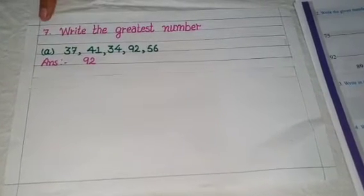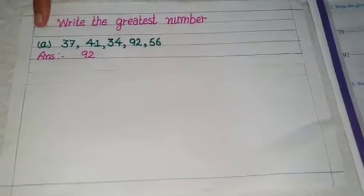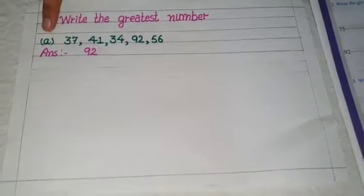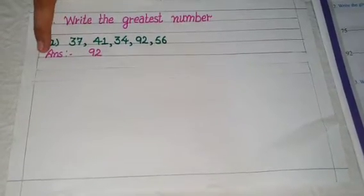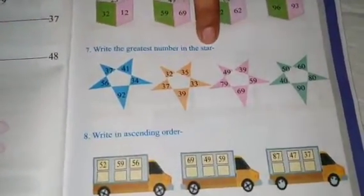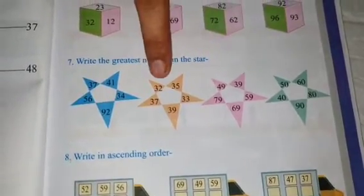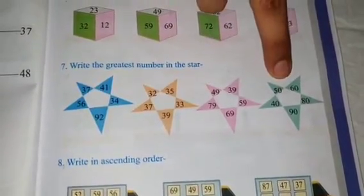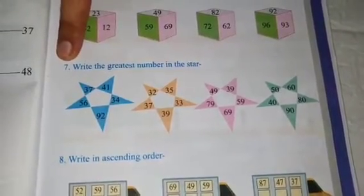Now you will solve 7th sum in your notebook like this. First note down the statement and then solve it. Write the correct answer. This is your homework — write the greatest number in the star. You will solve the next 3 statements, note them down in your notebook and solve them.